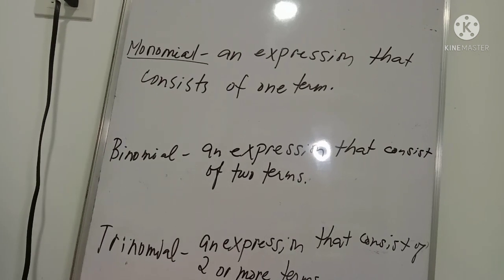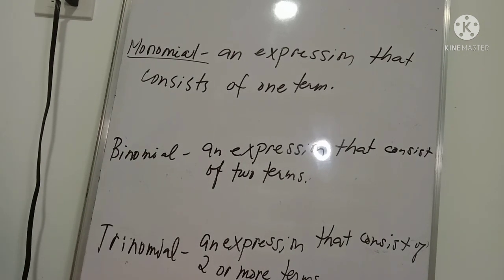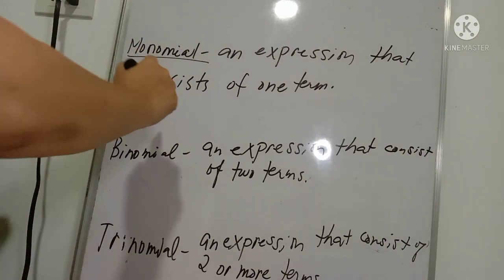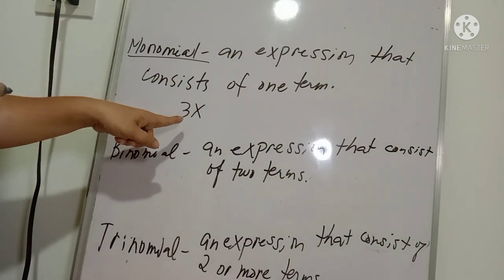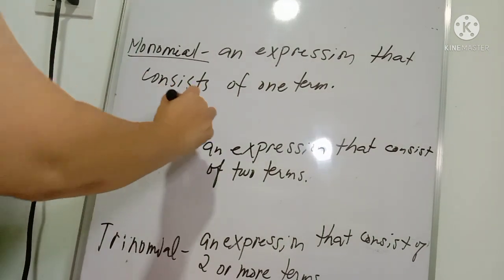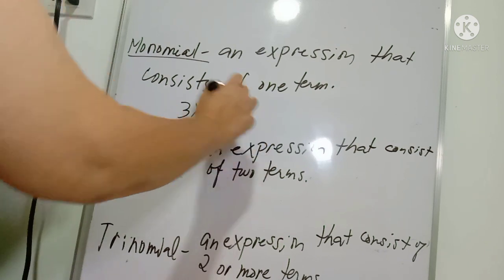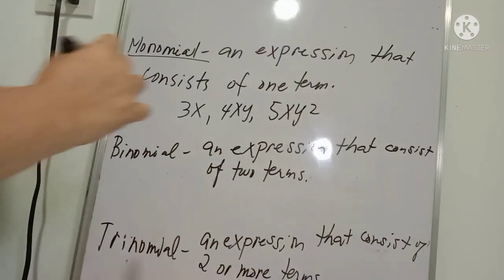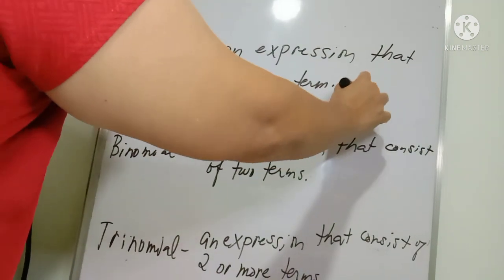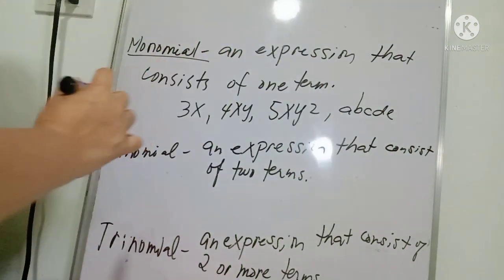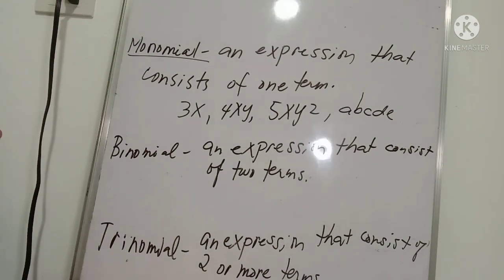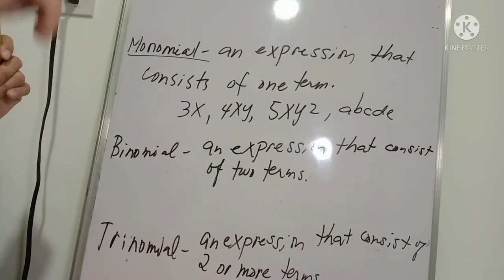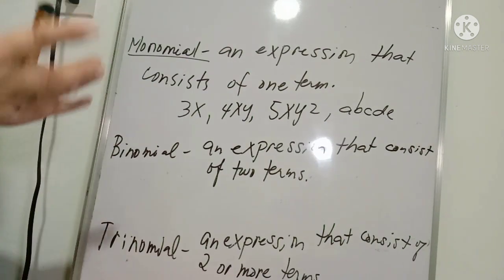Let's talk about a monomial. A monomial is an expression that consists of one term. For example: 3x — one term; 4xy — one term; 5xy — one term. Even the expression abcde, although it has five variables, is still considered a monomial because it is not separated by a plus or minus sign — it is just one term.